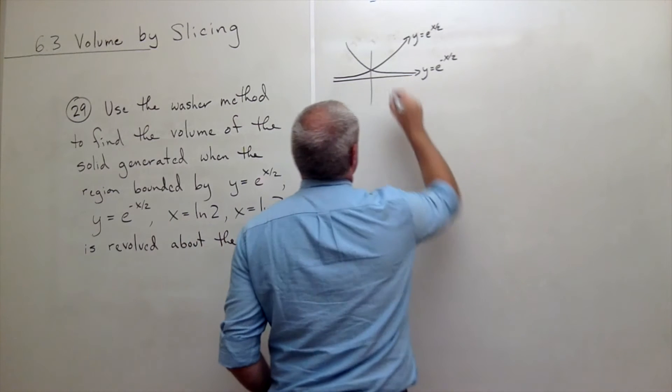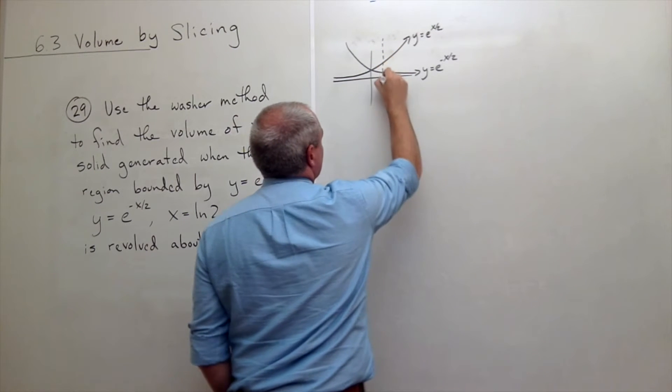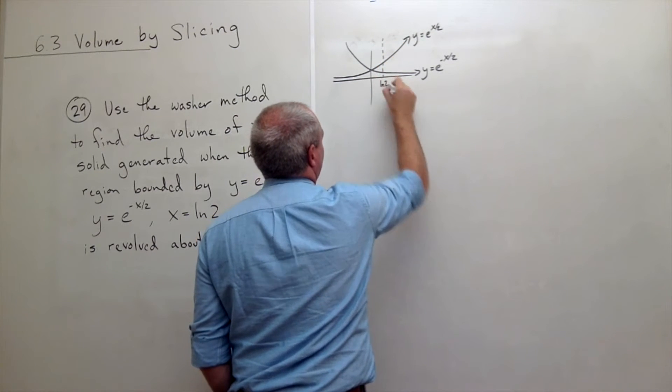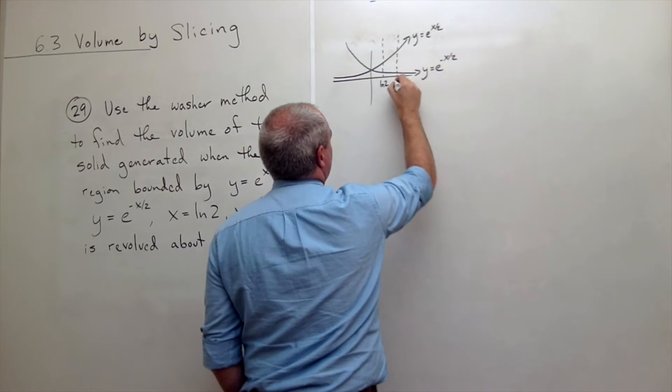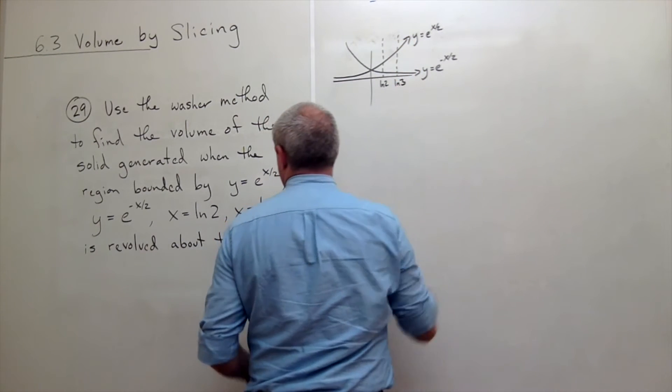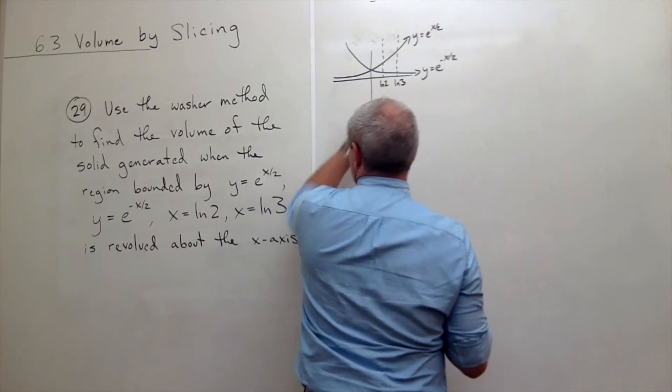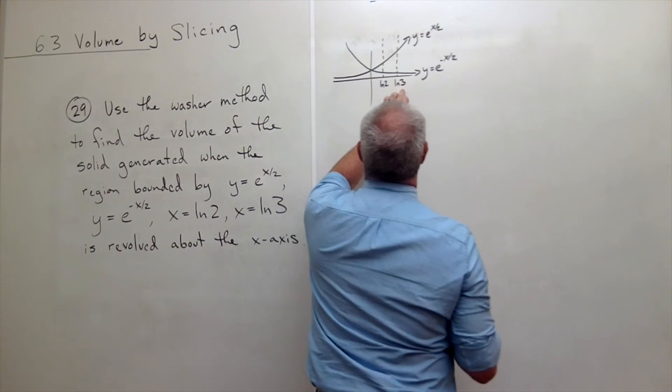We've got y equals ln of 2 which is if ln of 2 is right here. And we've got y equals ln of 3. I'm sorry, x equals ln of 2 and x equals ln of 3 right here.